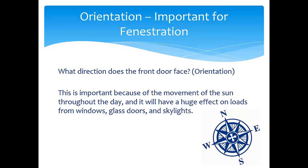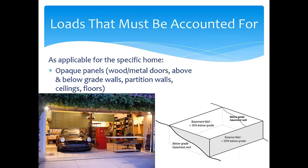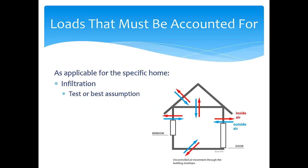The next set of loads that a designer has to account for are the opaque panels. These include wood and metal doors, above and below grade walls, exterior walls, partition walls, ceilings, and floors. The designer needs to account for each one of these. Infiltration is the next load — it's the uncontrolled air leakage into the conditioned space: the cracks, the openings, and also leakage through the attic, the ceiling, crawl spaces, and/or the basement if applicable. The most precise way to get the infiltration load is to measure it directly using a blower door. But if the home's not built yet, Manual J has some default values that can be used based on construction assumptions.